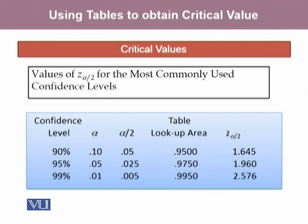The values of z_{α/2} for the most commonly used confidence levels are as follows. At 90% confidence level, alpha is 0.10, alpha/2 is 0.05, and we look up the area 0.95, which corresponds to z = 1.645. At 95% confidence level, alpha is 0.05, alpha/2 is 0.025, and the area 0.975 corresponds to z = 1.96. At 99% confidence level, alpha is 0.01, alpha/2 is 0.005, and the area 0.9950 corresponds to z = 2.576.